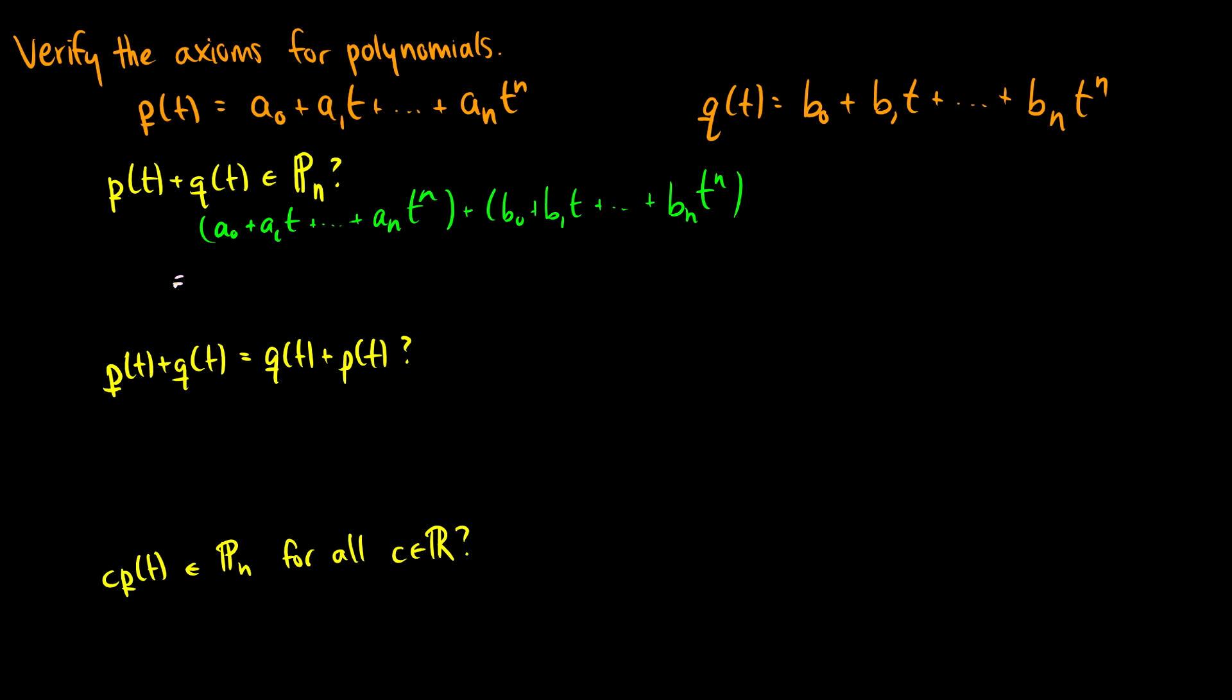So we can take a_0 plus b_0, then we can add a_1 plus b_1 times t, this will go all the way up to a_n plus b_n times t to the n.